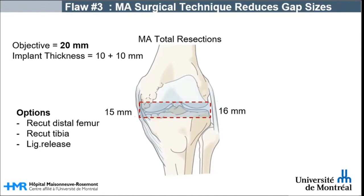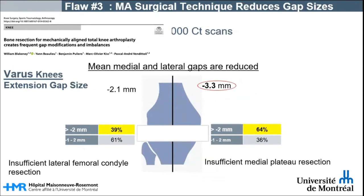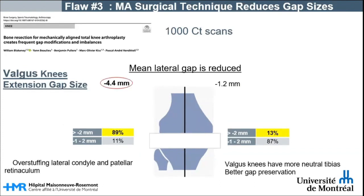In the vast majority of cases, as our study has shown, the created gaps in the medial and lateral compartments are reduced for varus knees in extension. The insufficient lateral femoral condyle resection distalizes the lateral joint surface by a mean of 2.1 mm, and the insufficient medial tibial plateau resection proximalizes the medial joint surface by 3.3 mm. For valgus knees, the lateral joint surface is distalized by a mean of 4.4 mm due to insufficient lateral femoral condyle resection, and the insufficient medial tibial plateau resection proximalizes the medial joint surface by 1.2 mm.